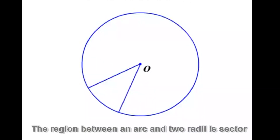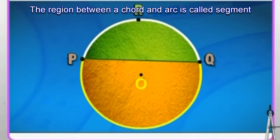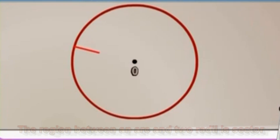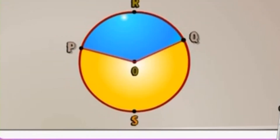The region between an arc and two radii is called a sector.